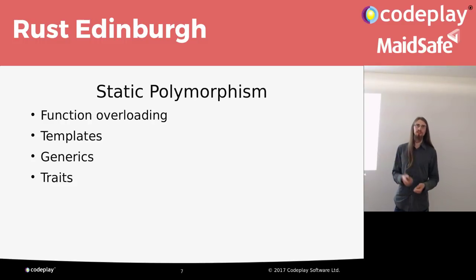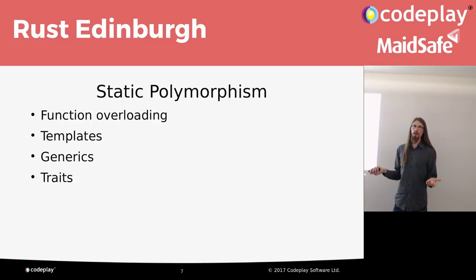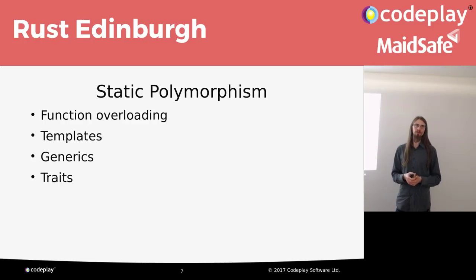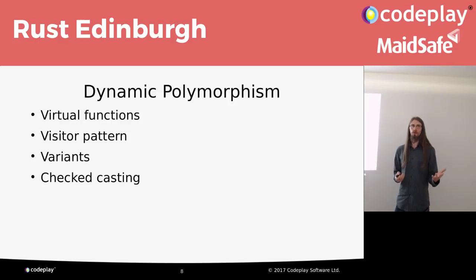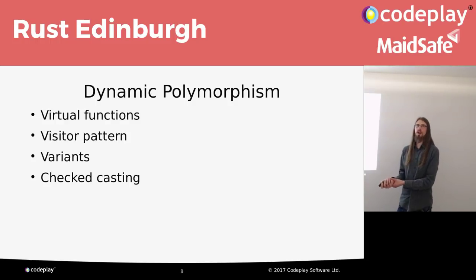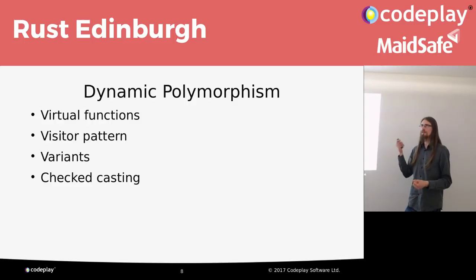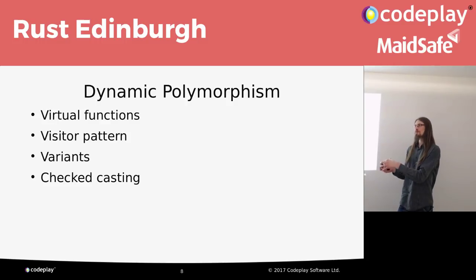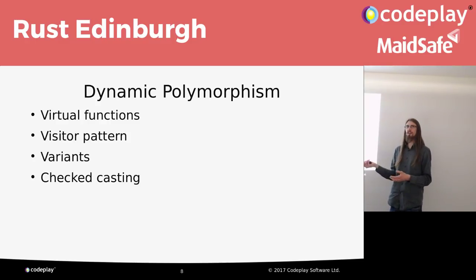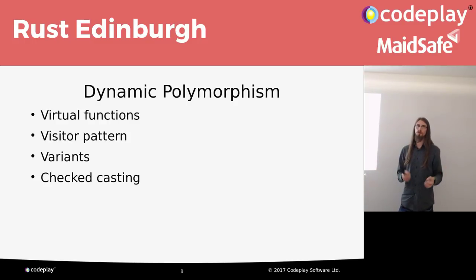We have templates in C++, which are C++'s major static polymorphism for generic interfaces. A lot of languages have generics, unless you're Go. And then traits, which are a feature of Rust. Dynamic polymorphism operates at run time. Some possible examples are virtual functions, where you have some kind of inheritance hierarchy and you can do dynamic dispatch based on the type of something at run time. We have things like the visitor pattern, variants, and checked casting - in C++ we have dynamic cast, which allows a checked cast of the dynamic type of an object using runtime type information.